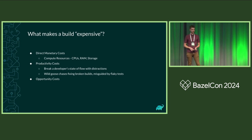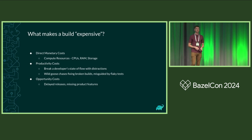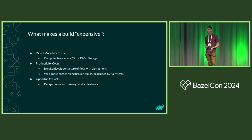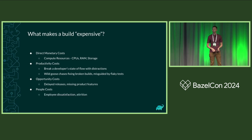And then there are the opportunity costs. What about delayed releases or missing product features that did not make it into release in time? For those of you in a continuous integration deployment cycle releasing daily or weekly, maybe this doesn't matter. But for those in an environment where you release quarterly, semi-annually, annually, or in an embedded environment where you get one shot to do a release, missing productivity could be critical and there's a large cost.